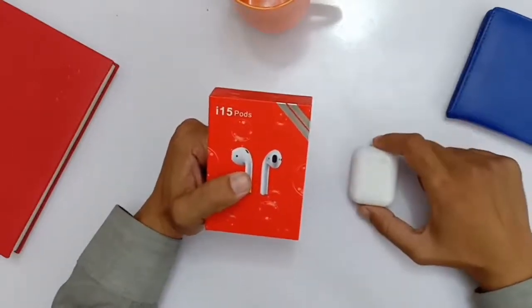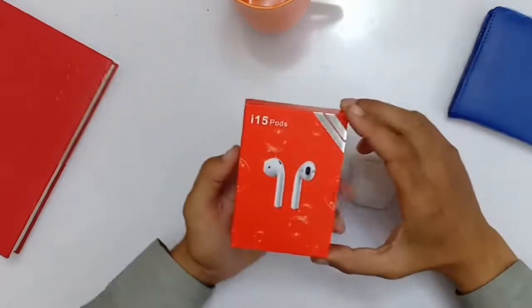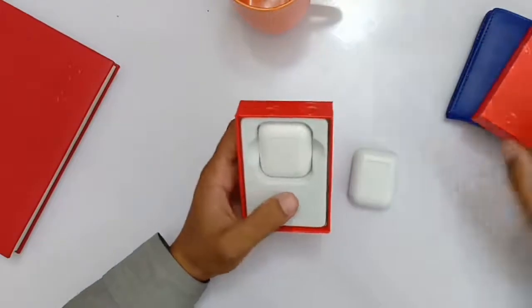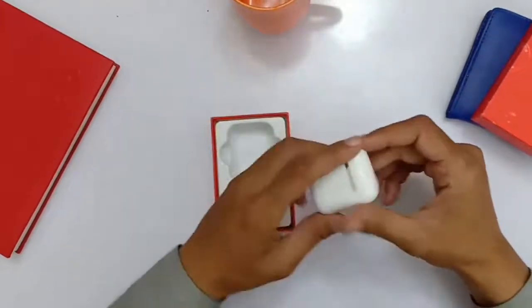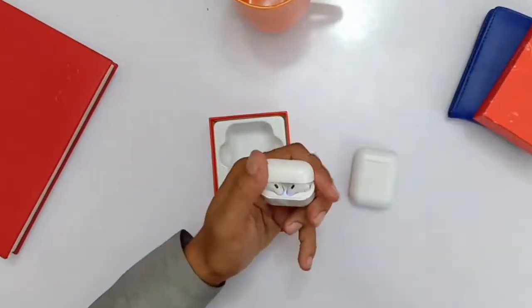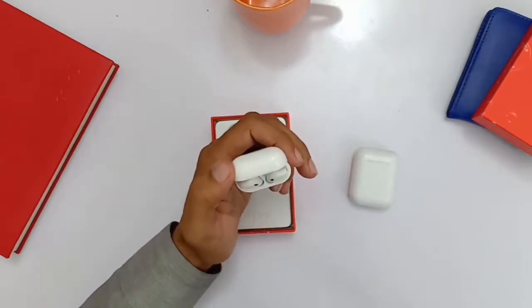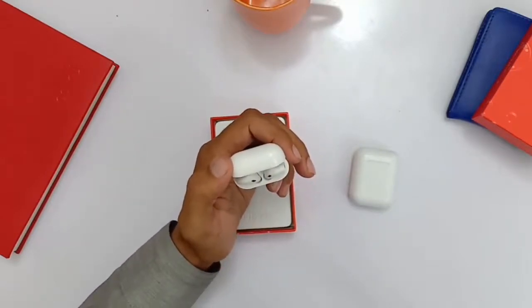We will open the box. So let's see, it's a pods charging case and inside are two pods. We will open the lights so that it is on. We will keep it on the side.